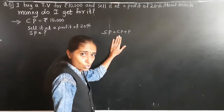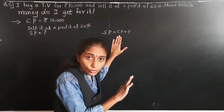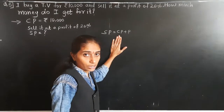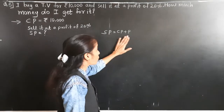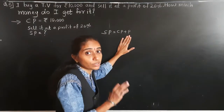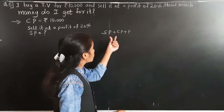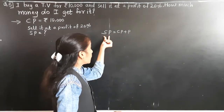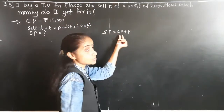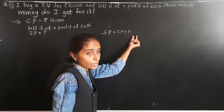Now cost price we know — it is 10,000. But profit we don't know as an amount; we only know the profit percent, which is 20%. So we need to find the profit amount first.